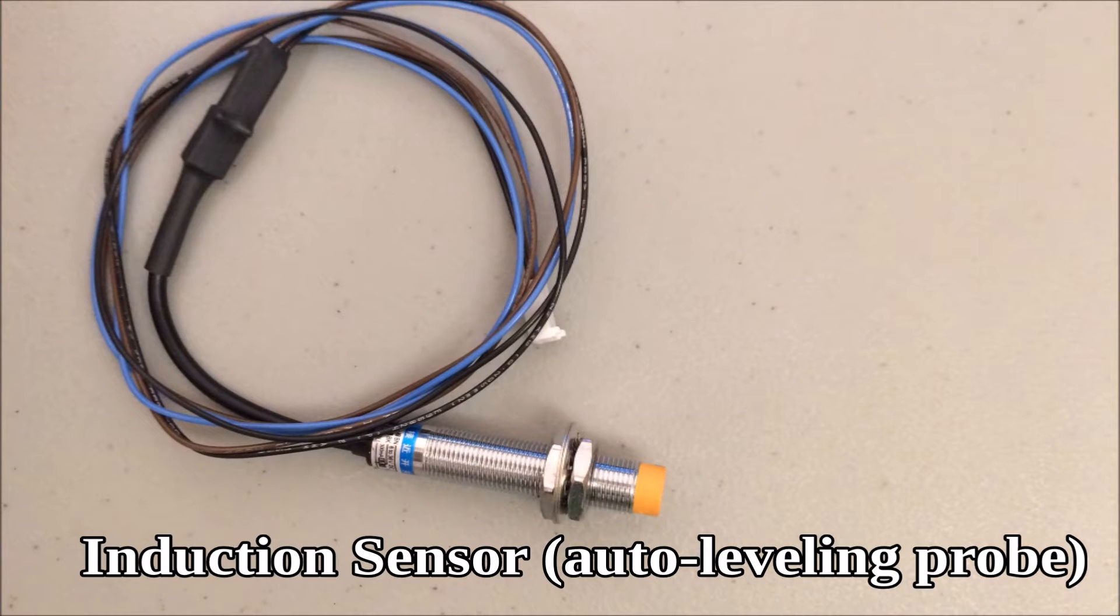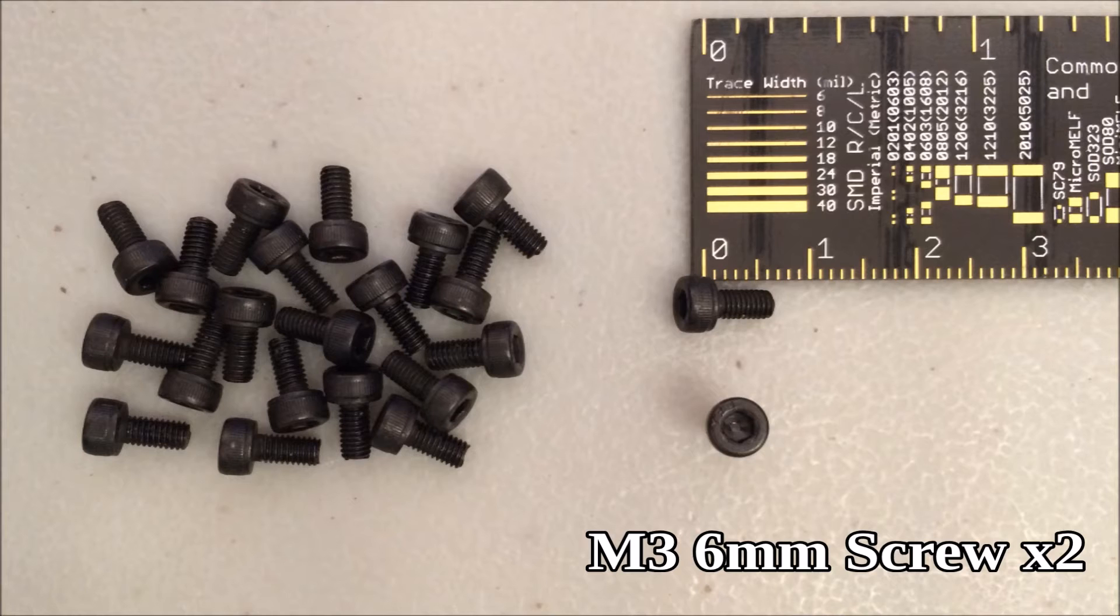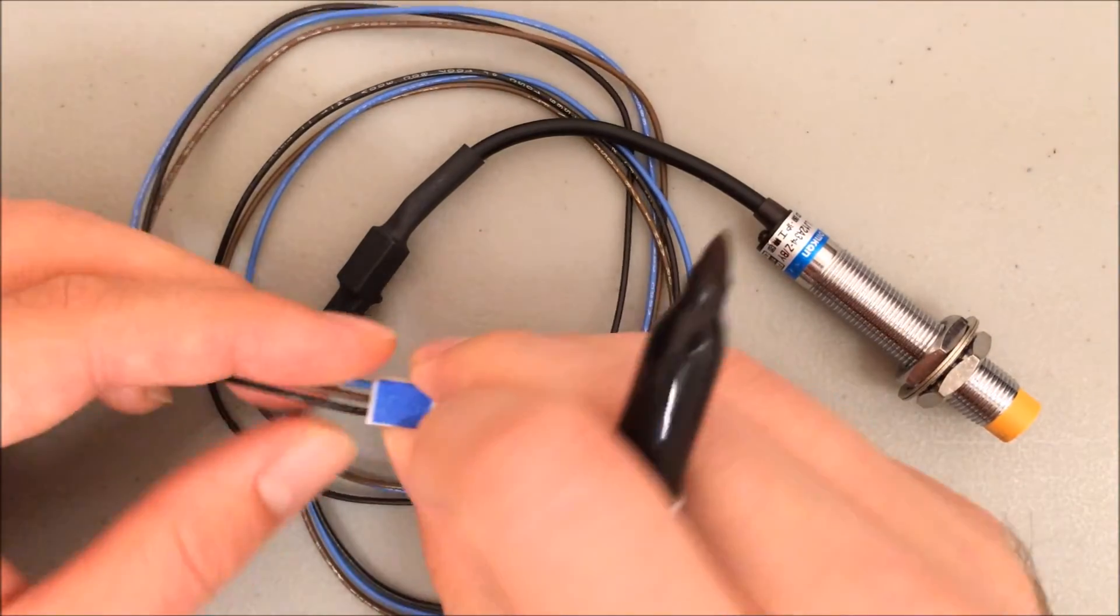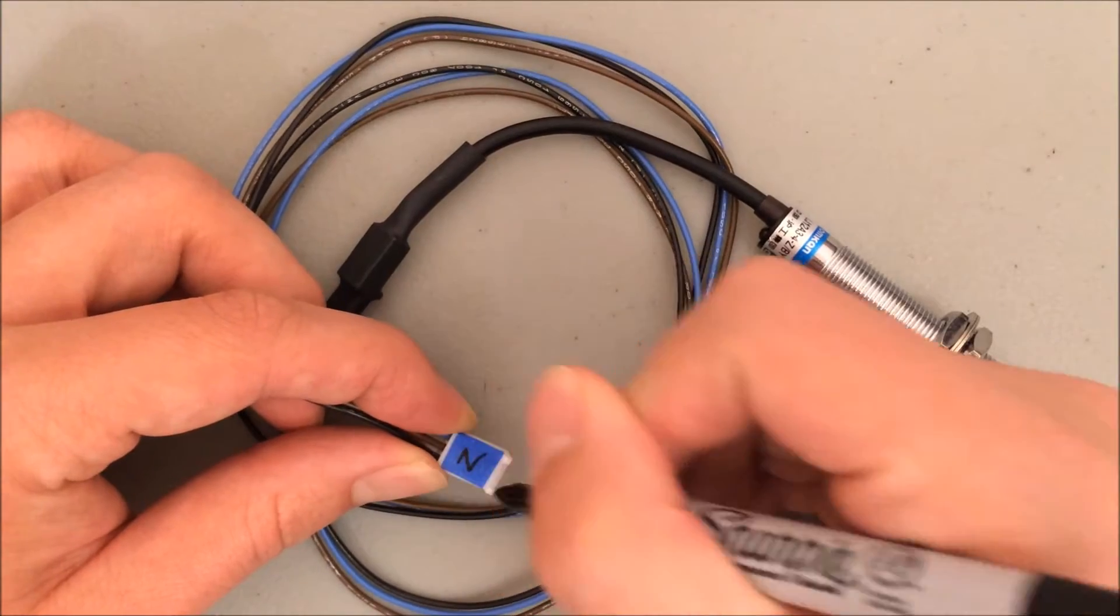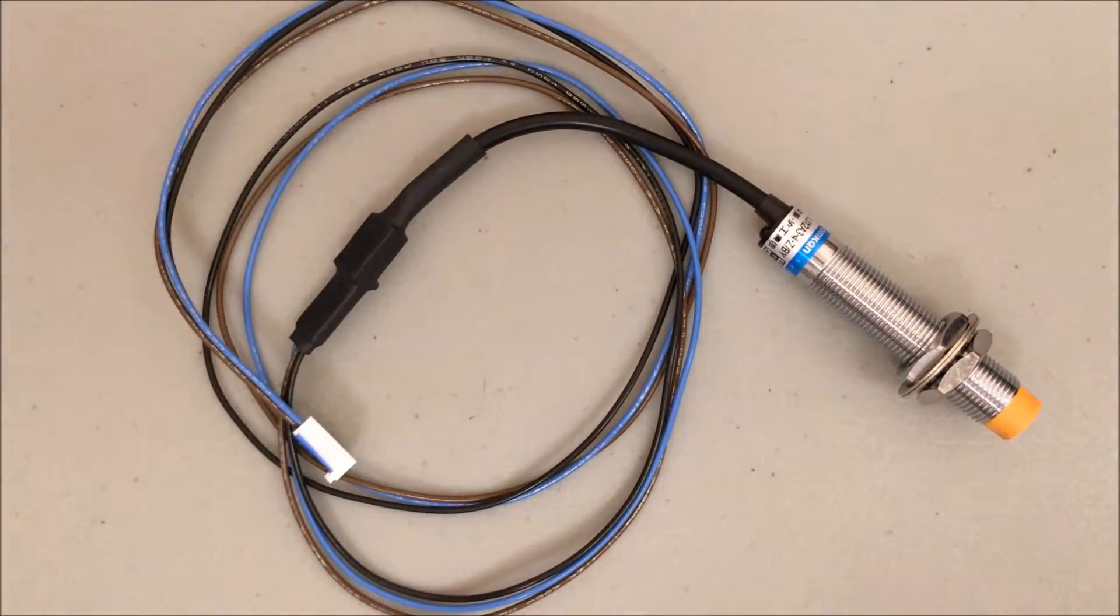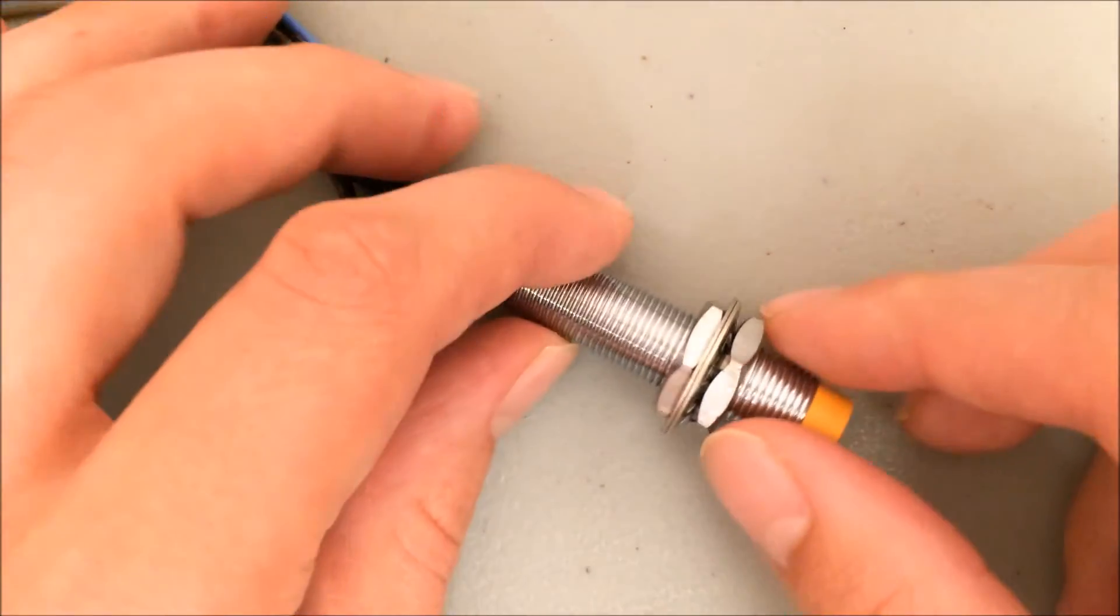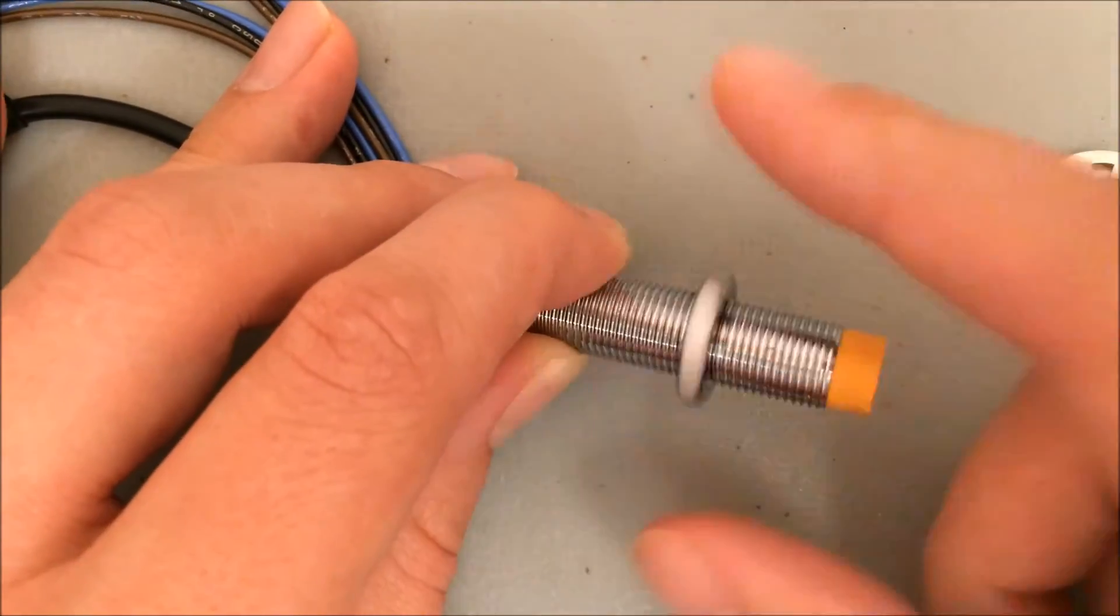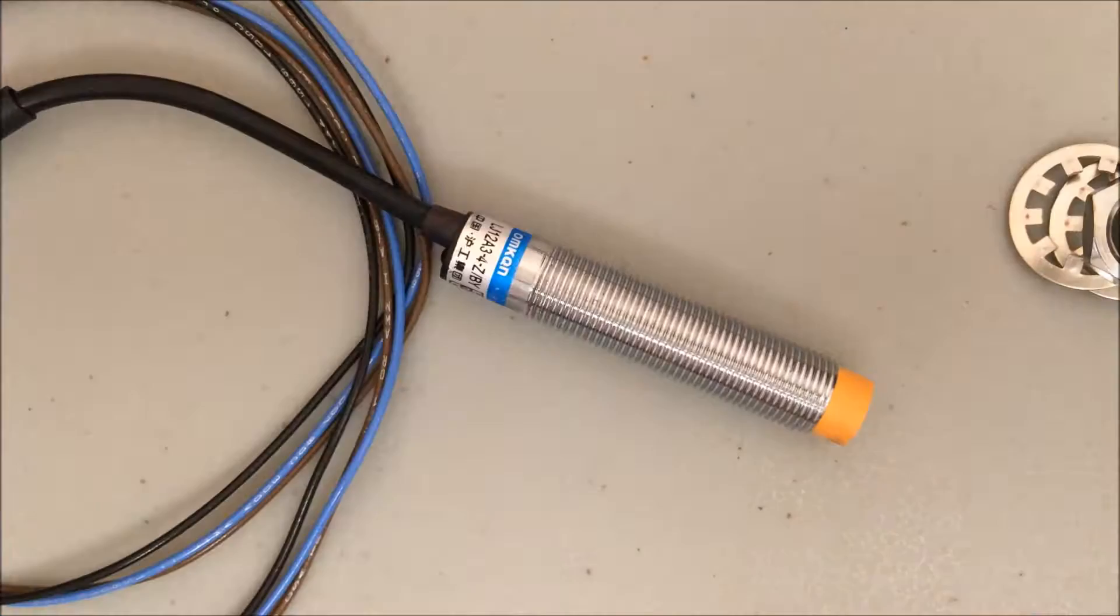You need the auto leveling probe or induction sensor and two M3 6 millimeter screws. Since this sensor essentially operates as the Z end stop, I'm going to label it with the letter Z. Add a label to yours if it isn't labeled already. The probe has some nuts and washers on it. Go ahead and remove those. The nuts and washers will not be reattached at any point so you can just set them aside.